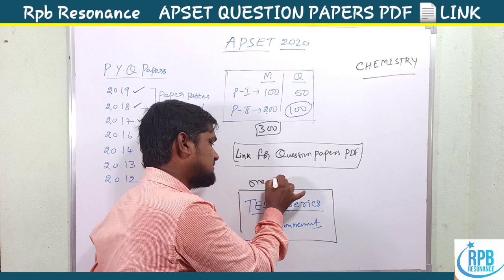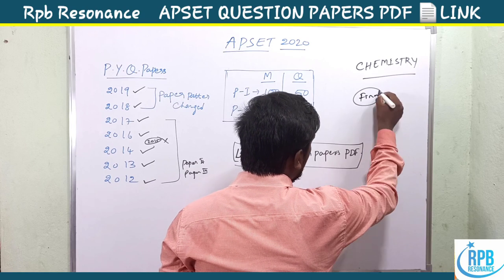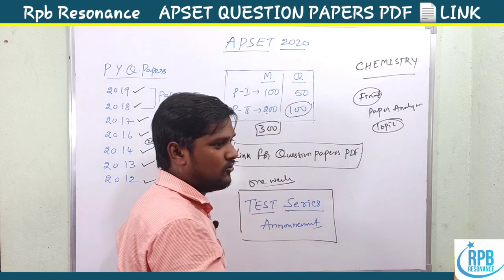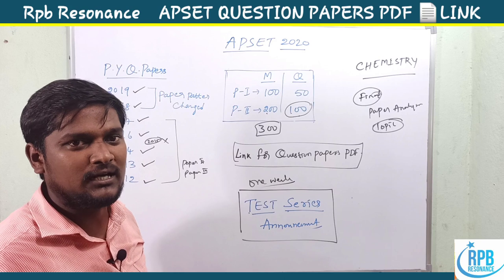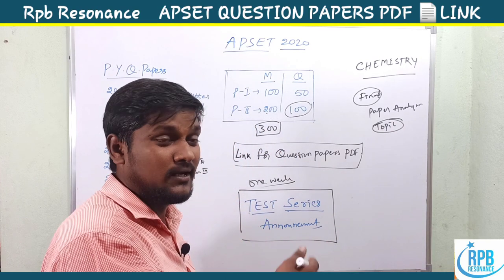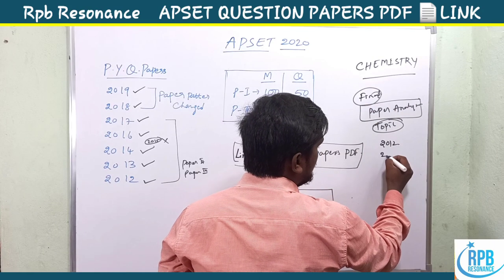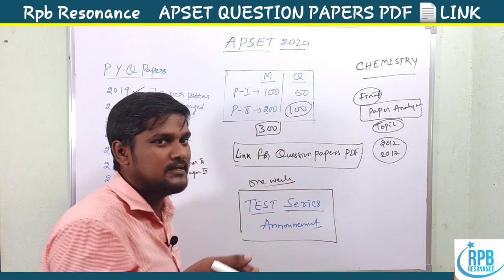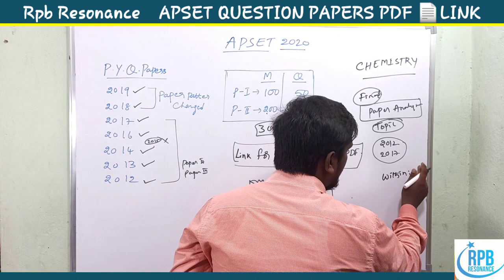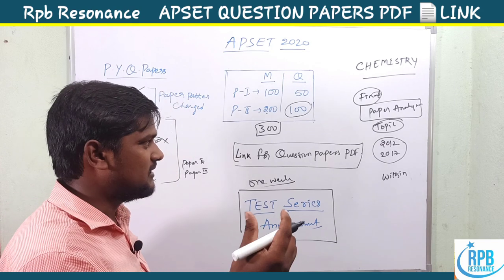The final thing is a paper analysis — topic-wise paper analysis will be done for inorganic, organic, and physical chemistry. This topic-wise analysis from 2012 to 2017 will help you understand which important topics carry the most weight, giving you a clear idea for your preparation strategy. This will also be announced within one week.